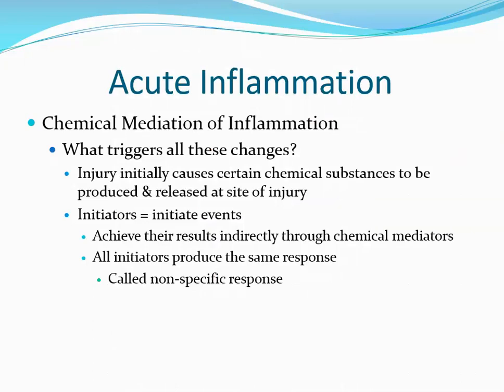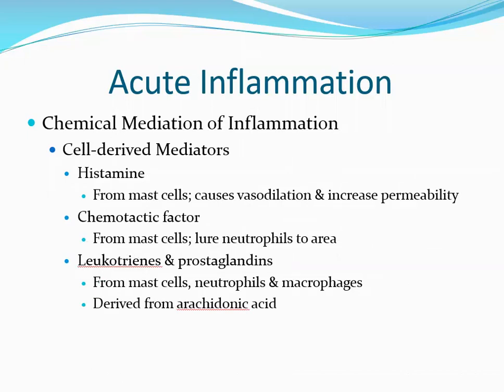What triggers all these changes? The injury initially causes certain chemical substances to be produced and released at the site of injury. An initiator is anything that starts this process — it could be trauma, an infection, injured cells, antigen-antibody complexes, etc. These initiators all achieve their results indirectly through chemical mediators. All initiators, regardless of origin, will produce the same response — this is why inflammation is referred to as a nonspecific response.